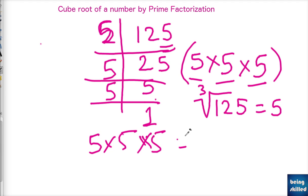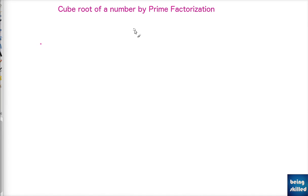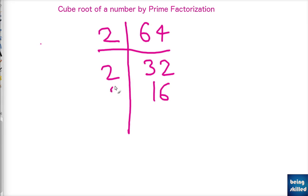Let's take another example. We have 64. Let's divide by 2, we get 32. Again divide by 2, we get 16. Again divide by 2, we get 8. Again divide by 2, we get 4. Again divide by 2, we get 2, and again 1.